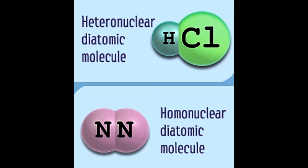Monatomic elements are usually inert gas elements like helium, neon, argon, etc. As the name suggests, a diatomic molecule is made of two atoms of the same or different elements joined together by means of a chemical bond. In polyatomic molecules, three or more atoms of the same or different elements are joined by chemical bonds.